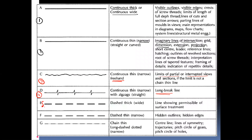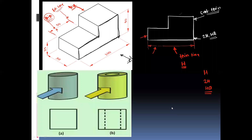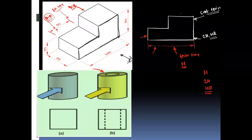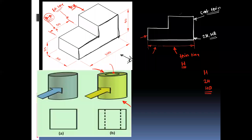The next type is the dash line. Dash lines are used to show the hidden outlines or the hidden edges. What is the meaning of a hidden edge? Observe this second drawing — this is one hollow cylinder, meaning this cylinder has a hole at the center. If you observe from the front direction, you can only observe the visible outline.